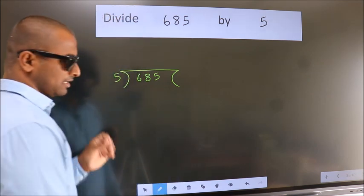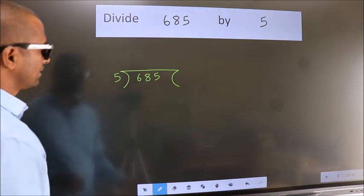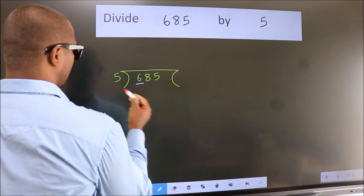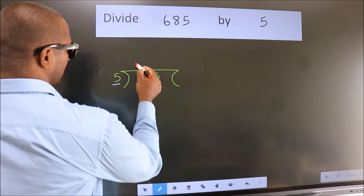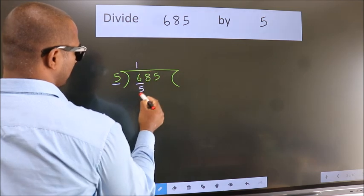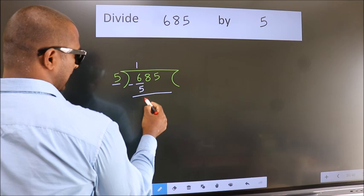This is your step 1. Next, here we have 6. Here 5. A number close to 6 in 5 table is 5 once 5. Now we should subtract. We get 1.